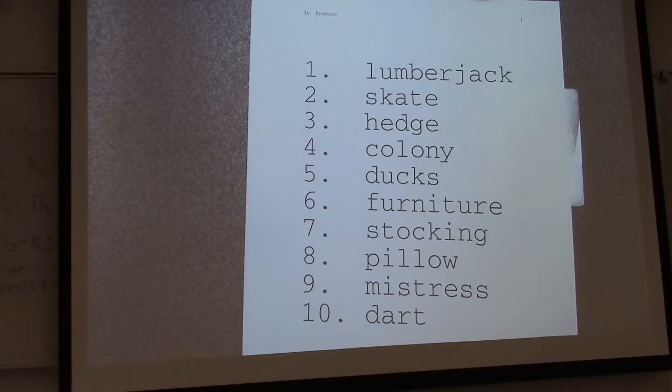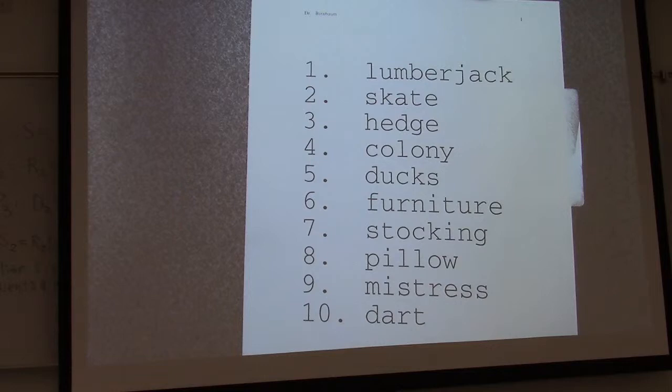Nine is a line — the wife drew a line around the guy's waist and said, 'No mistress. You can't cross the line.' The mistress can't cross the line. Ten is a hen — the hen was going 'pop pop pop pop.' People asked what was the matter, and it said, 'Somebody threw a dart and hit me.' So picture a poor little hen with a dart stuck in it.